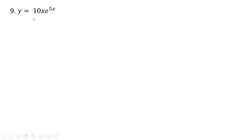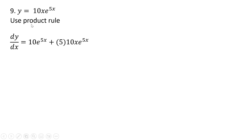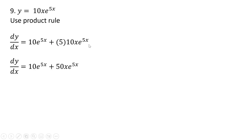Number 9 is a little bit more complicated — we're going to use the product rule. I'm going to first take the derivative of 10x, and that's 10. So that's going to be 10 times e raised to the power of 5x. And then I'm going to concentrate on e raised to the 5x power. The derivative of 5x is just 5, so that comes down in front. We can simplify that: 5 times 10 gives us 50.